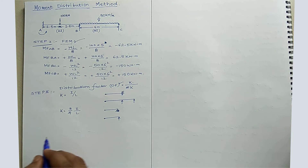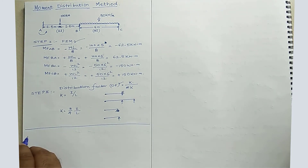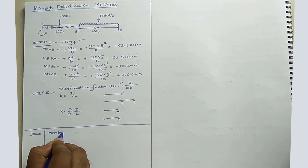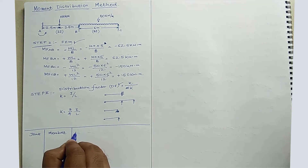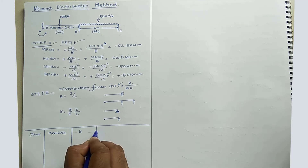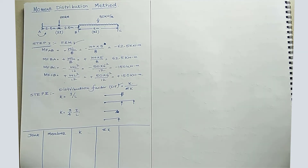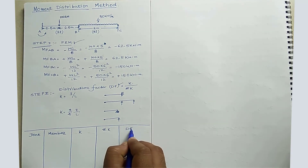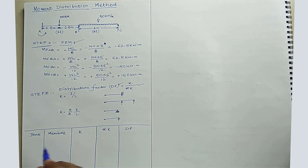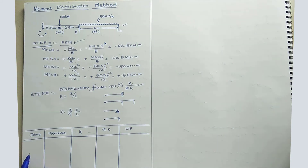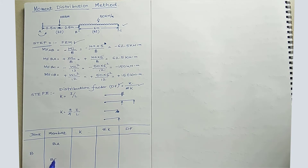To determine the distribution factor, we draw a table with columns for joint, member, relative stiffness, sum of relative stiffness, and distribution factor. The numerical has only one joint — joint B — which has two members: BA and BC.